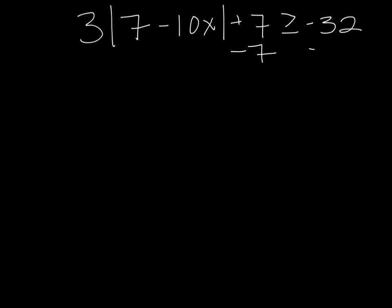We subtract 7 from both sides. We have 3 times the absolute value of 7 minus 10x is greater than or equal to negative 39.